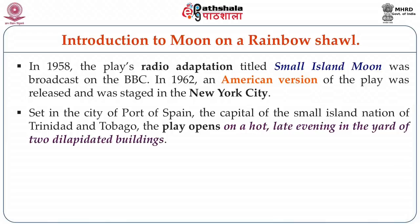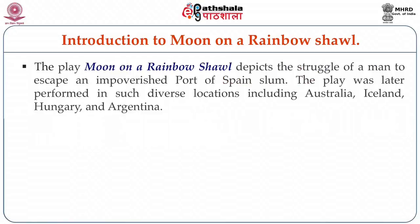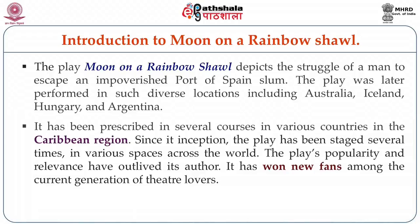Set in the city of Port of Spain, the capital of the small island nation of Trinidad and Tobago, the play opens on a hot late evening in the yard of two dilapidated buildings. Moon on a Rainbow Shawl depicts the struggle of a man to escape an impoverished Port of Spain slum. The play was later performed in diverse locations such as Australia, Iceland, Hungary and Argentina. It has been prescribed in several courses in various countries in the Caribbean region. Since its inception, the play has been staged several times across the world, and its popularity and relevance have outlived its author, winning new fans among the current generation of theatre lovers.